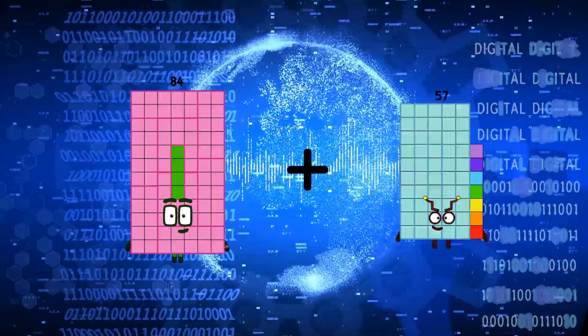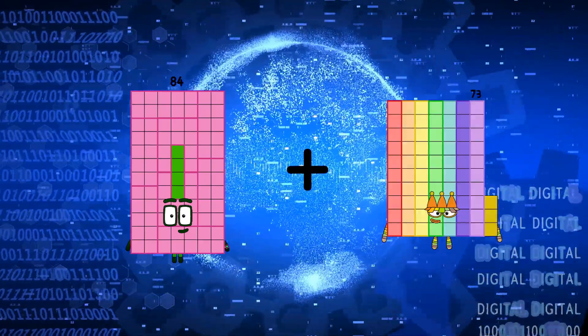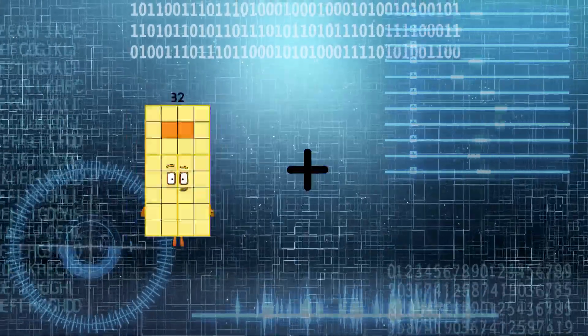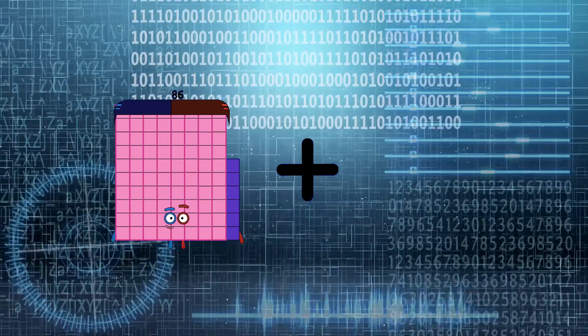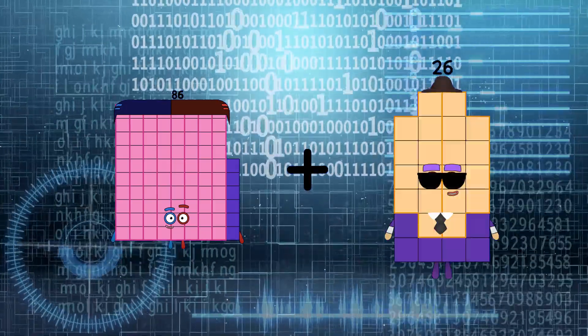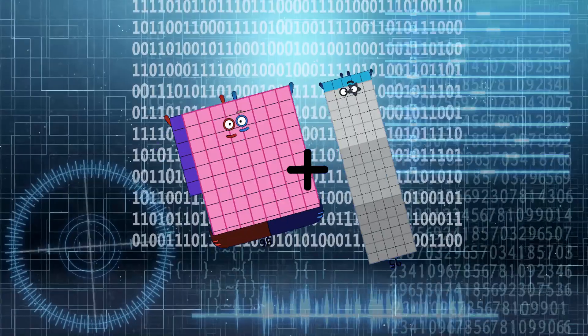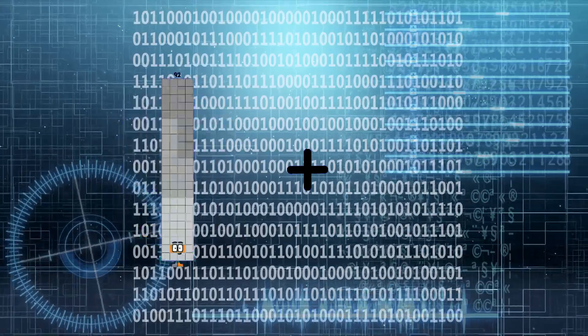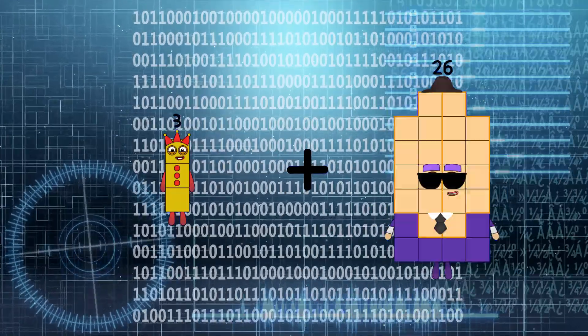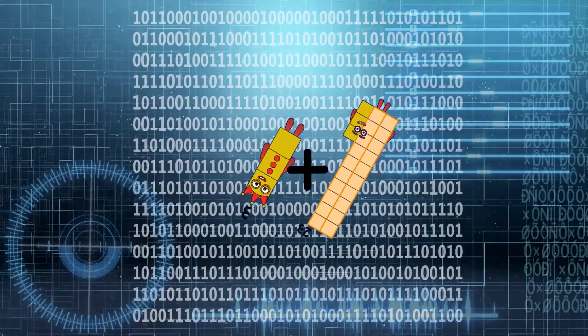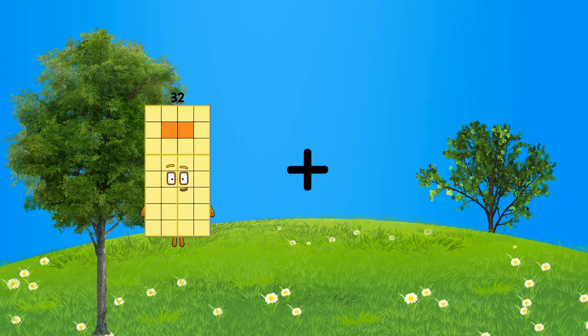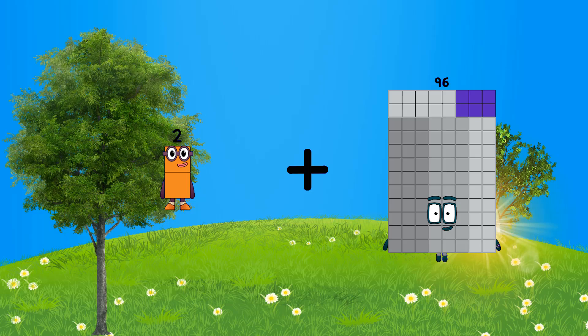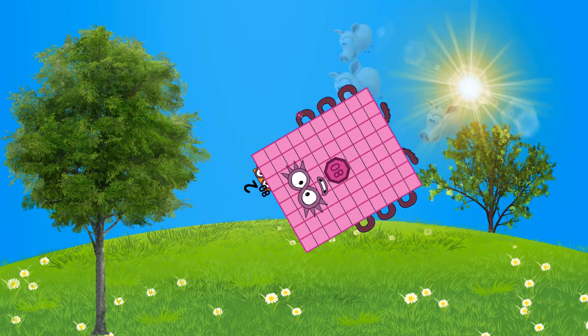84 plus 73 equals 157, 86 plus 95 equals 181.